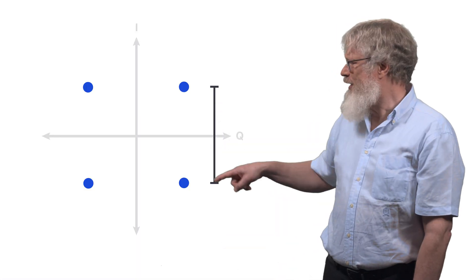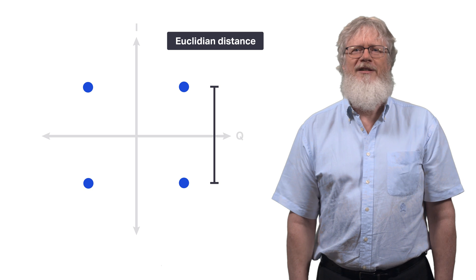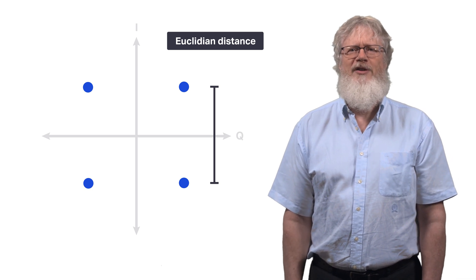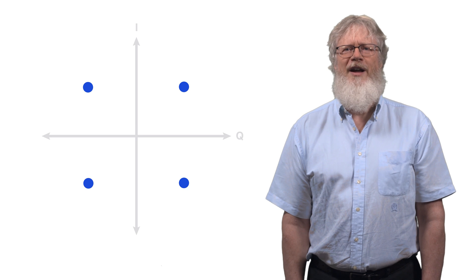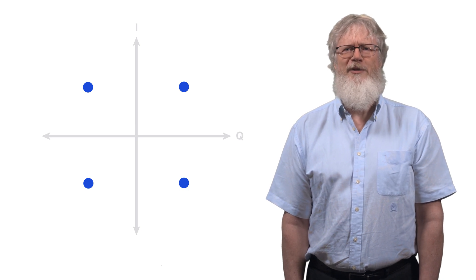The distance between the points of the constellation determines the noise tolerance, the symbol error rate. So we want to have a large separation between the points and small energy from the constellation.